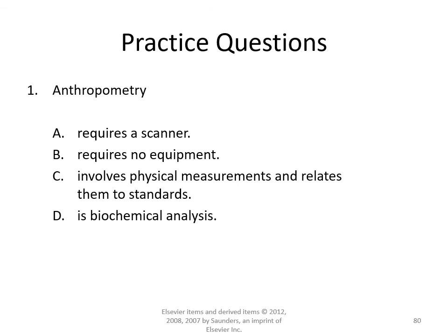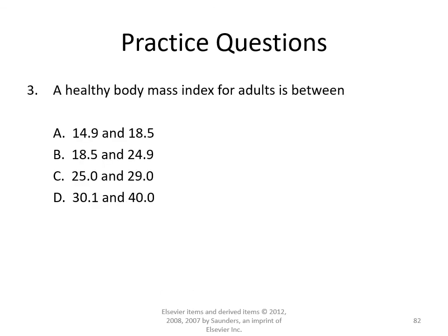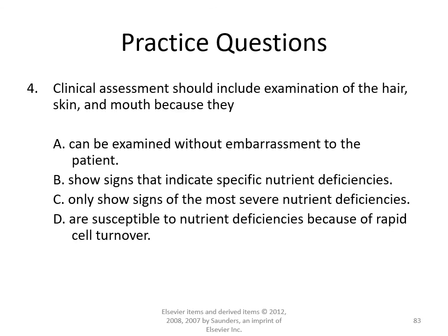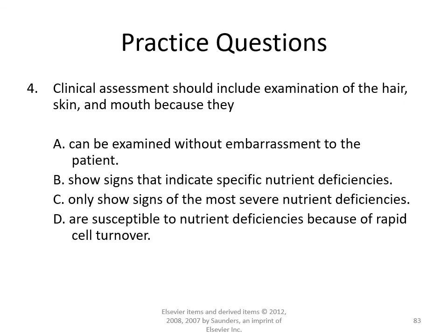Practice questions review: Anthropometry (answer C) involves physical measurements and compares them to standards. The method that is NOT used for body composition (answer B) is indirect calorimetry, which measures metabolism instead. A healthy BMI for adults (answer B) is 18.5 to 24.9. Clinical assessment should include examination of the hair, skin, and mouth (answer D) because they are susceptible to nutrient deficiencies due to rapid cell turnover.